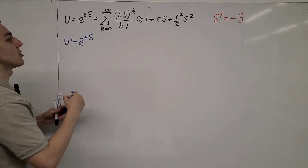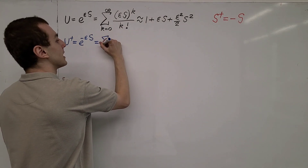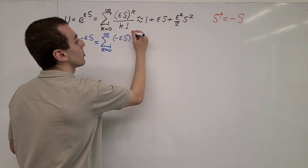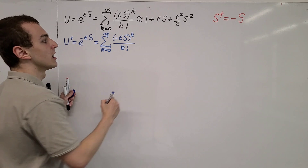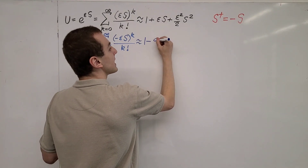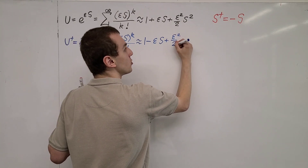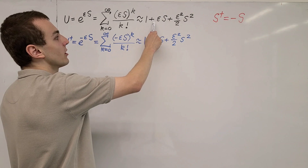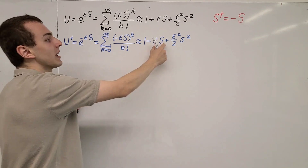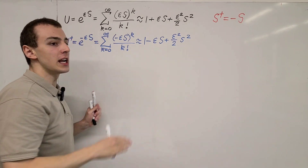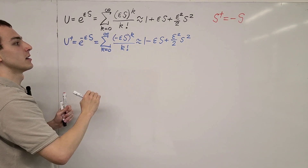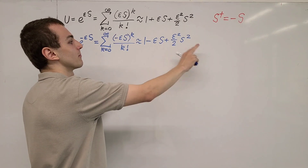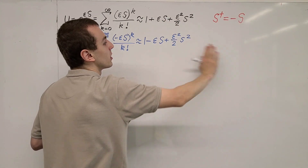Now let's look at U dagger. This sum is still from k equals zero to infinity, but we're going to have (minus epsilon S) to the power of k divided by k factorial. So this is approximately equal to one minus epsilon S plus (epsilon squared on two) S squared. All of the odd terms are going to have an extra minus sign introduced, because we're raising minus one to the power of k. The even terms remain unchanged. And because we're doing a second order approximation, we're going to ignore cubic terms.